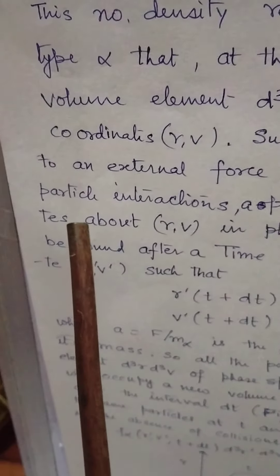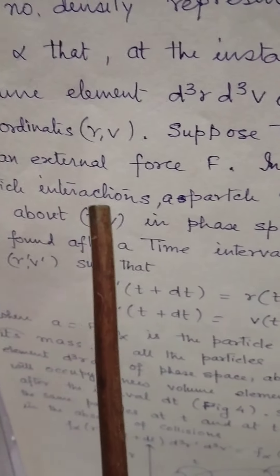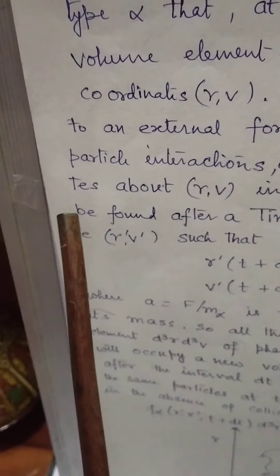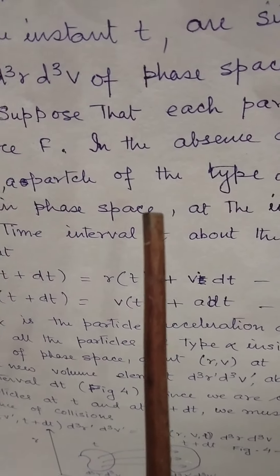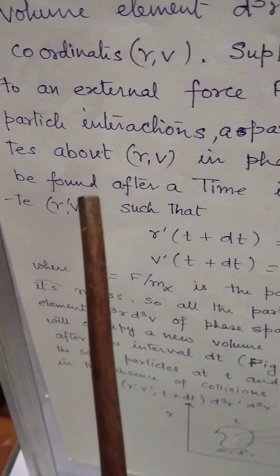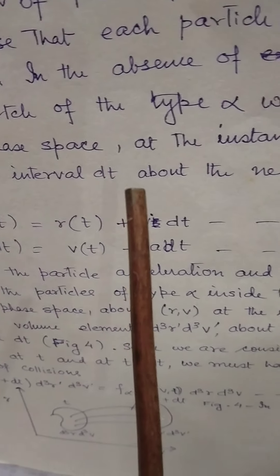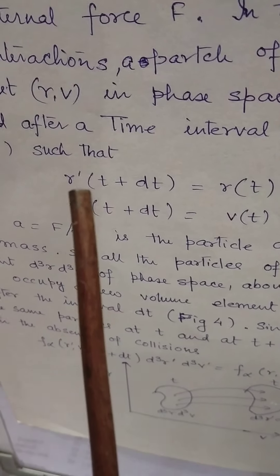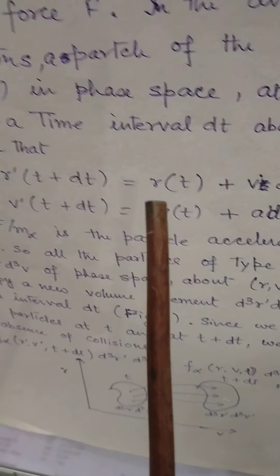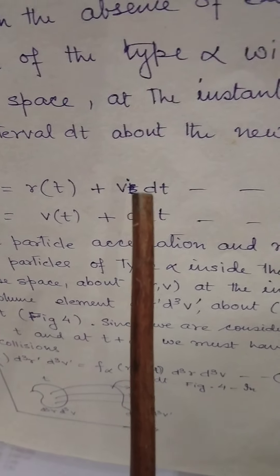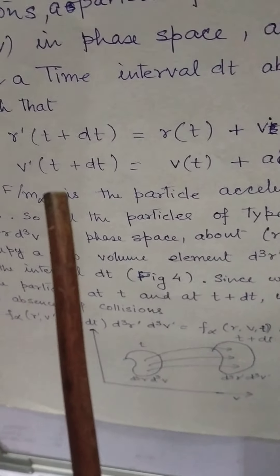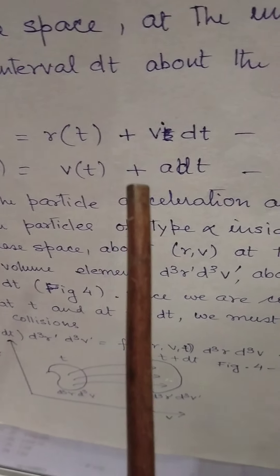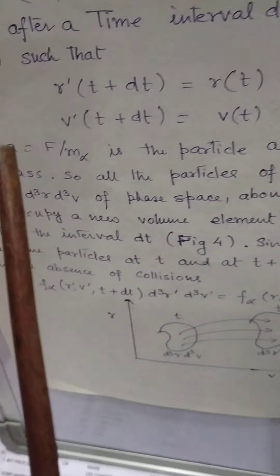Suppose that each particle is subjected to an external force f. In the absence of particle interactions, a particle of type alpha with coordinates about r, v in phase space at the instant t will, after a time interval dt, be found at new coordinates r-dash, v-dash, such that r-dash(t + dt) = r(t) + v·dt — equation number 2 — and v-dash(t + dt) = v(t) + a·dt — equation number 3.